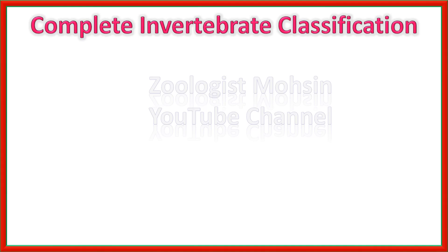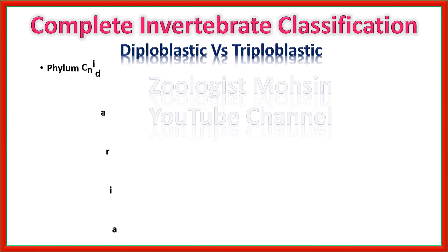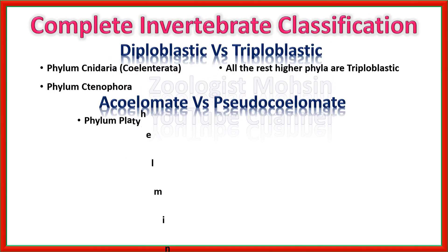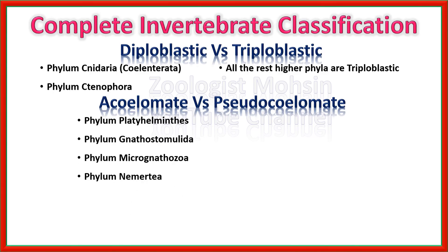Let's have a quick overview. Diploblastic versus Triploblastic: phylum Cnidaria and Ctenophora are the only two diploblastic phyla; all the rest of the higher phyla are triploblastic. Acoelomate versus Pseudocoelomate: phylum Platyhelminthes, Gnathostomulida, Micrognathozoa, and Nemertia — these four phyla are completely acoelomate and do not have a coelom at all.